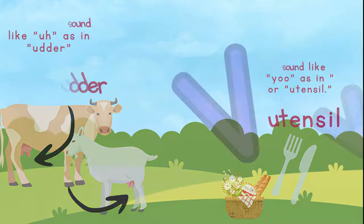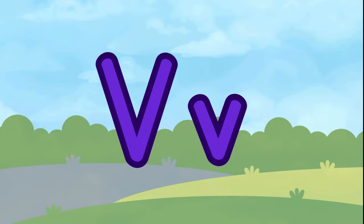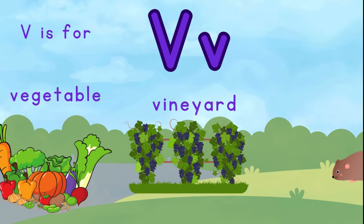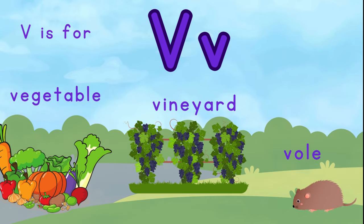This is the letter V. V is for vegetable. V is for vineyard. And V is for vole.